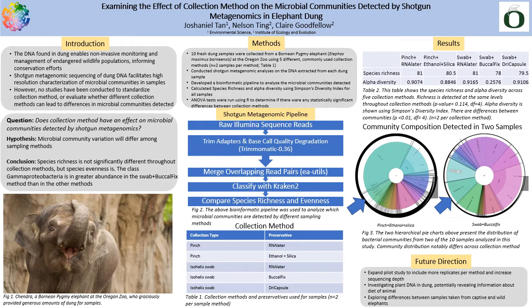My hypothesis is that microbial community variation will differ among sampling methods. To test this hypothesis, I analyzed samples from a Bornean pygmy elephant named Chandra at the Oregon Zoo. Bornean pygmy elephants are an endangered subspecies of elephants. There are only an estimated 1,500 left in the wild, and Chandra is actually the only one of her kind in captivity. The primary threat to these animals is the loss of habitat due to expansion of agriculture in palm oil plantations.